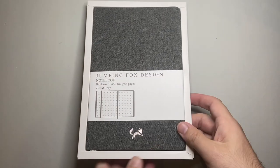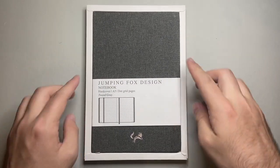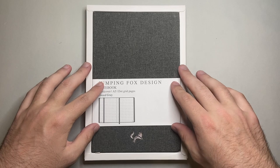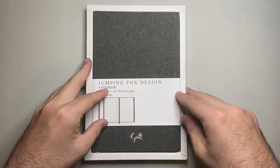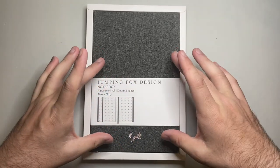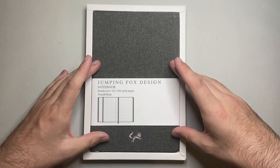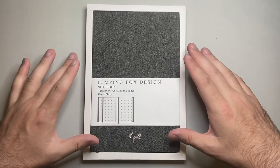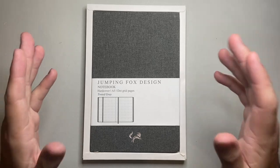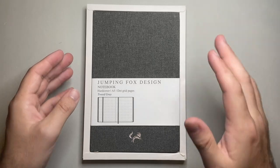You slip that off and it's presented here nicely in the box, surrounded by protective cardboard with a nice belly band on it. This is the tweed grey hardcover A5 notebook with dot grid pages. Really nice notebook. I'm going to show you some features, writing sample and all of that.